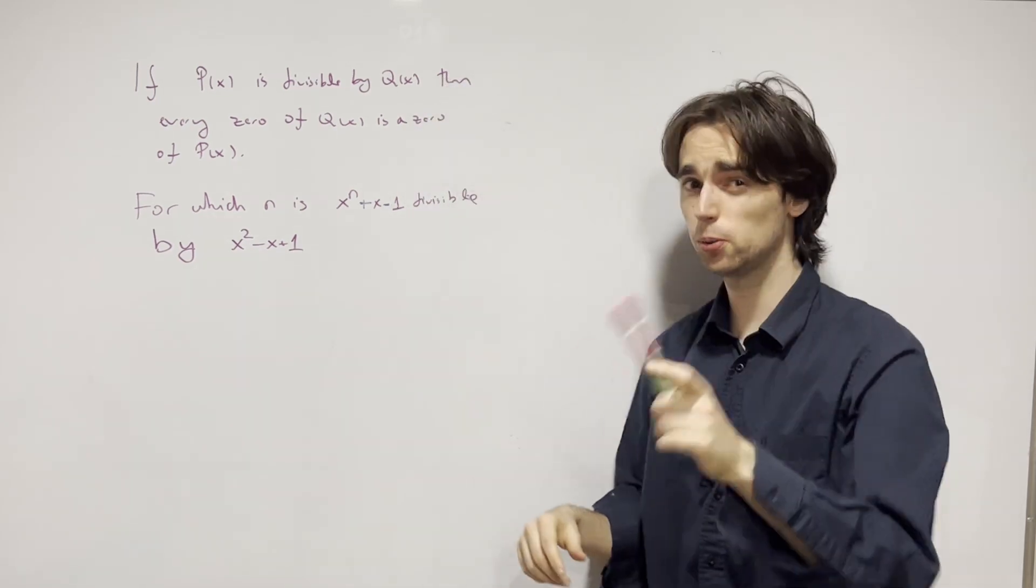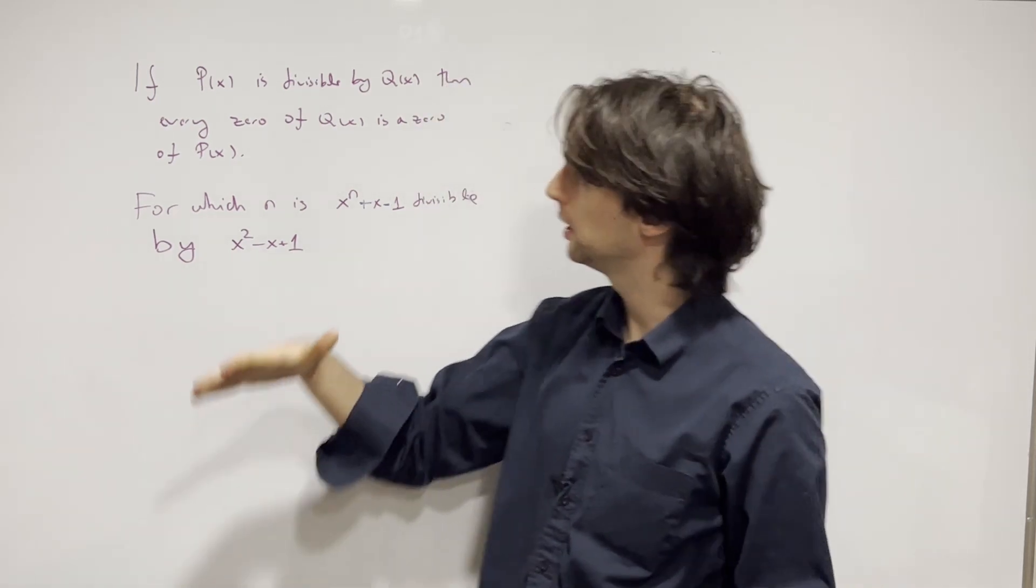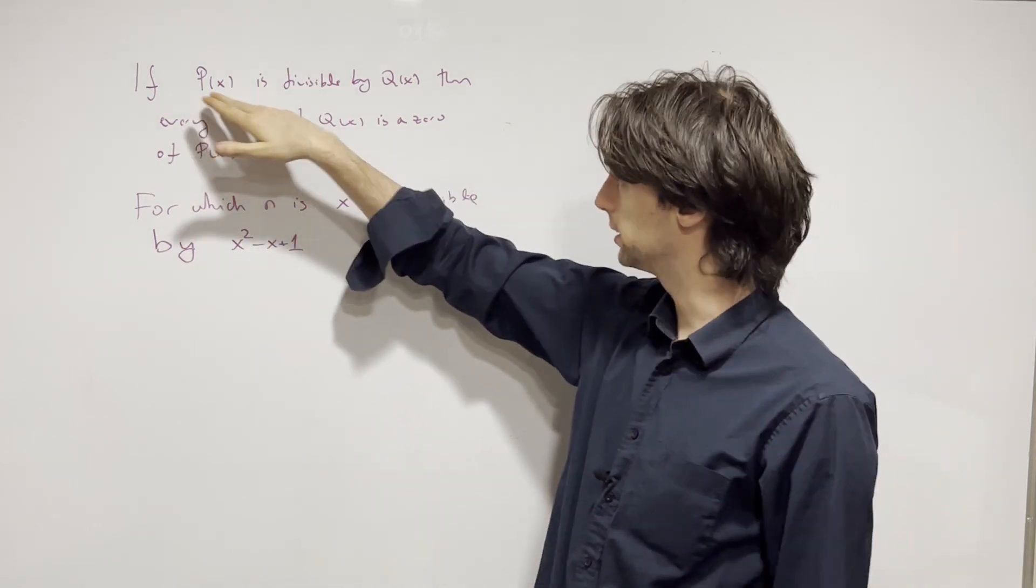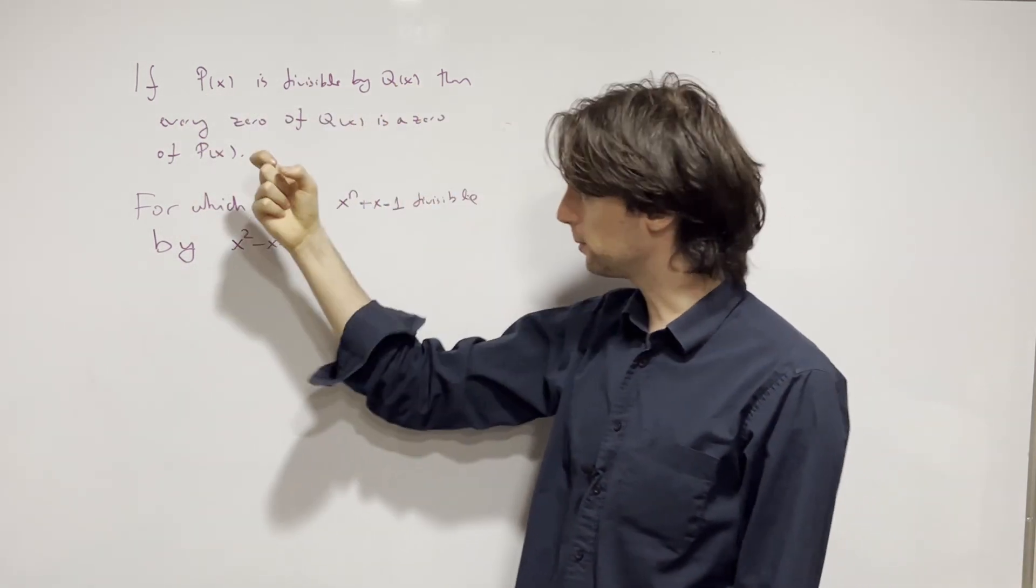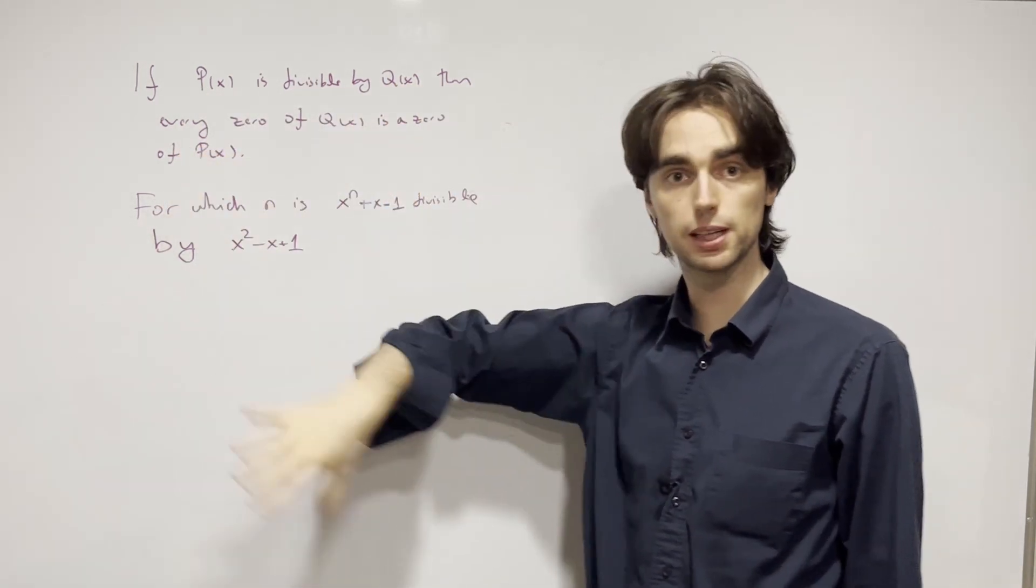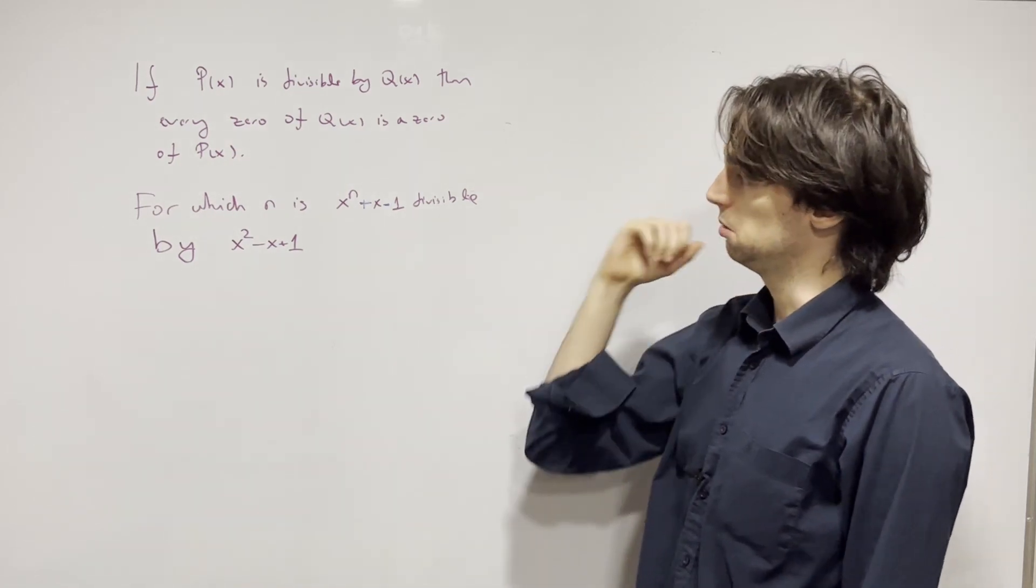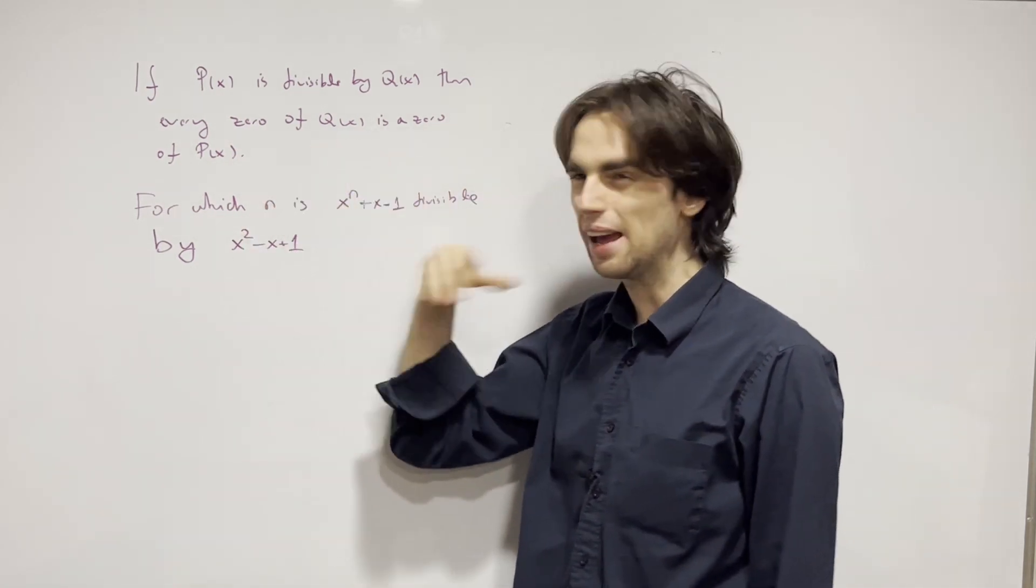Hello fellow problem solvers, we're doing lesson three on polynomials. If p(x) is divisible by q(x), then every zero of q(x) is a zero of p(x). For polynomials p and q, this is true in whatever field they're in, whether polynomials over complex numbers, real numbers, rationals, or integers, where we will most often use them, though not always as is the case here.